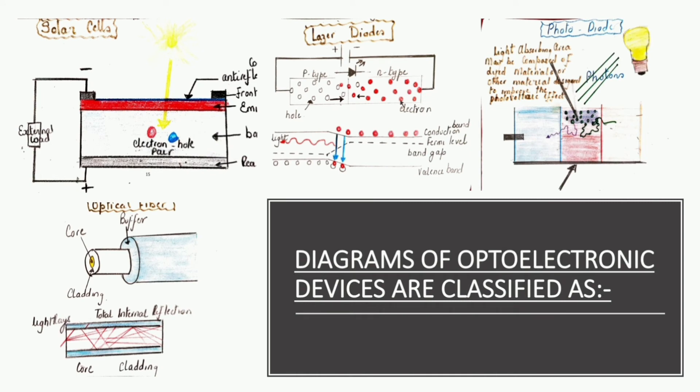Here are the following diagrams of optoelectronic devices, which are solar cells, laser diodes, photodiode, and optical fibers.